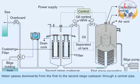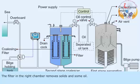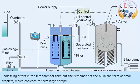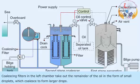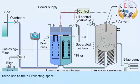Water passes downwards from the first to the second stage coalescer through a central pipe. The filter in the right chamber removes solids and some oil. Coalescing filters in the left chamber take out the remainder of the oil in the form of small droplets, which coalesce to form larger drops. These rise to the oil collecting space.